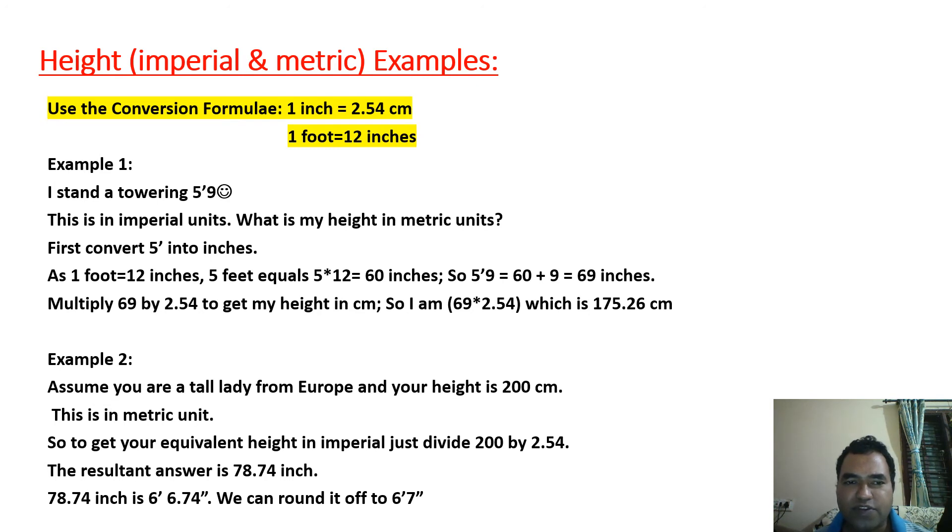Now multiply 69 by 2.54 to get my height in centimeters. So my height is 69 times 2.54 which is 175.26 centimeters.